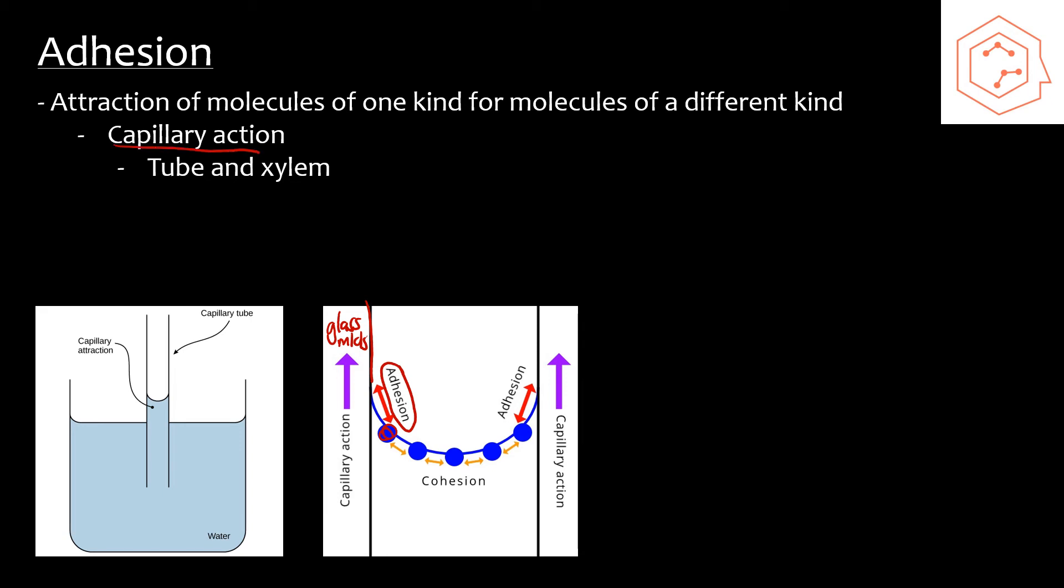This is an upward motion against gravity, and it depends on the attraction between water molecules and the glass walls of the tube. It also depends on the interactions between water molecules themselves, so that's cohesion. This structure is known as a meniscus, and that is the result of cohesion and adhesion working together.